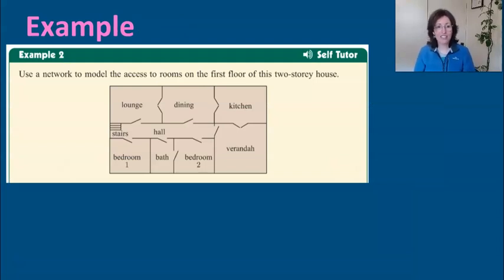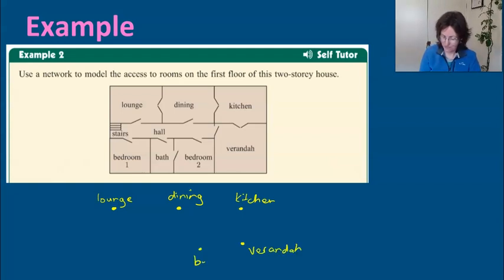A quick example here, if we're asked to use a network to model the access to the rooms on the first floor of a two-story house, how would you go about doing a problem like this? So there are nodes and edges. You start by identifying what the nodes are. We're going to remove the walls of the house and put in all of our different nodes. The first one there, we could name the lounge. Then the next one is dining. And I'm going to go ahead and speed this up as I label the rest. And I bet some of you are wondering, do we label the hall or not? We do actually, it does count as a room for this scenario. So we need to label it and give it a node.